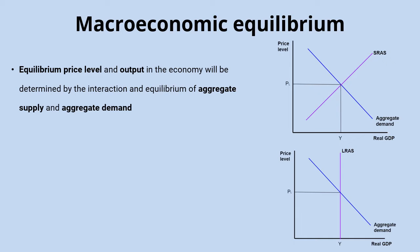Macroeconomic equilibrium will be determined by the interaction of aggregate supply and aggregate demand. Equilibrium will be reached where the two curves intersect. We can use this as a starting point to model the impact of changes in any of the factors affecting aggregate demand or aggregate supply on inflation and real GDP, and therefore also on the level of employment.